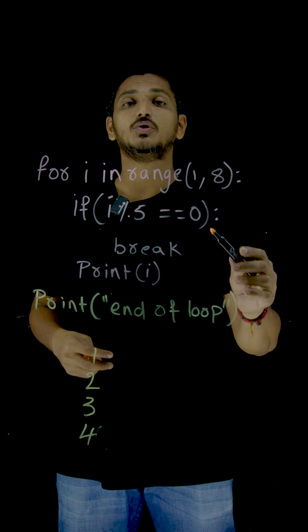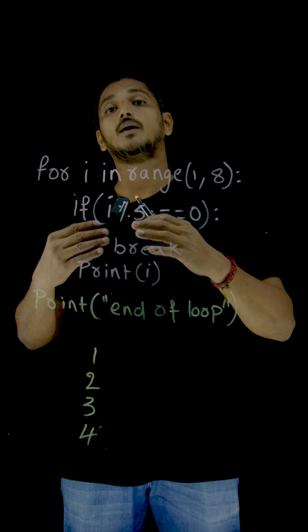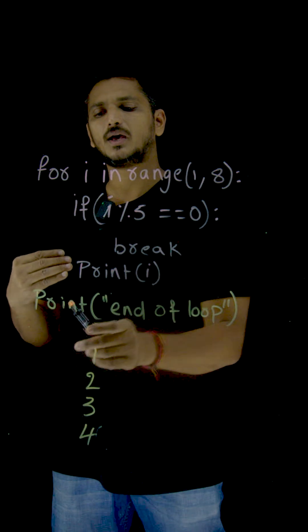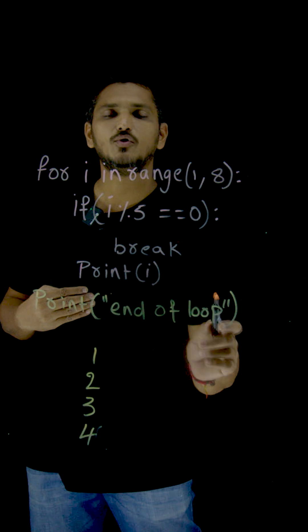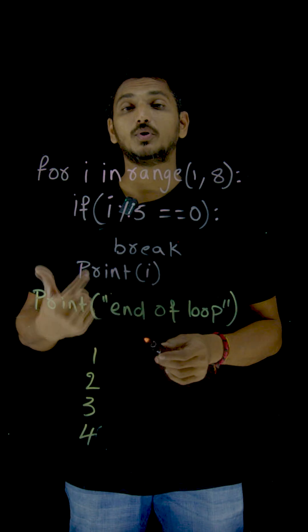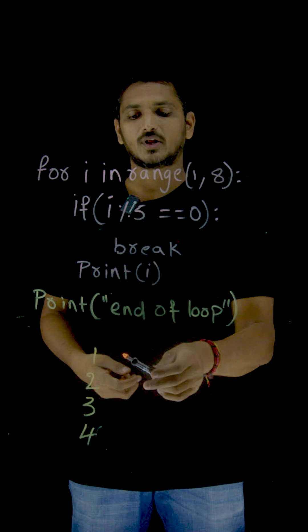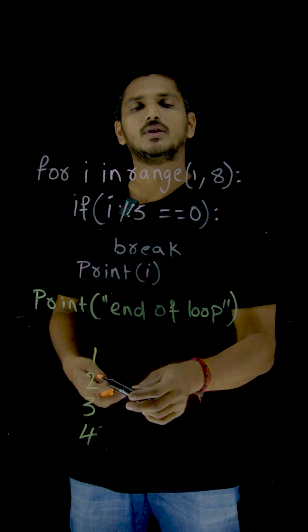Execution jumps from here to out of the loop. What is the code that is present out of the loop? Print end of loop. So this is the output you are going to be displayed. What are the values you are going to get? 1, 2, 3, 4.